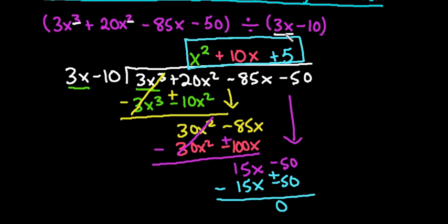Which means that if I solved this equation, x equals 10 thirds would be a 0 of this polynomial. So if you end up with a remainder of 0, then the term that you're dividing by is a factor.